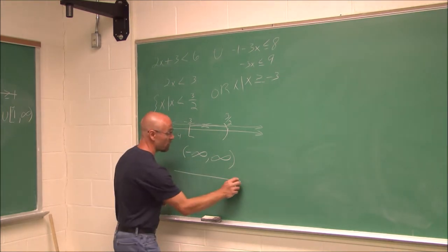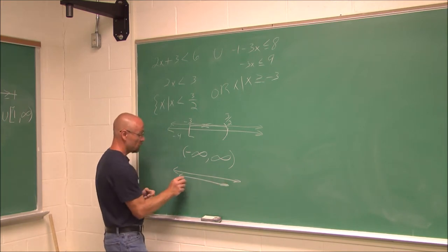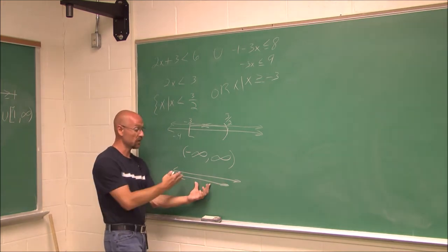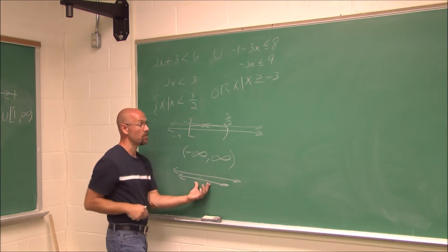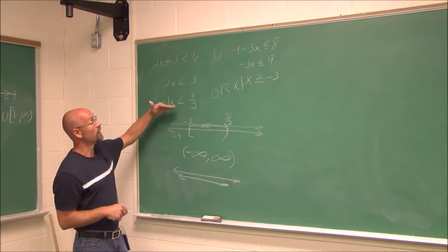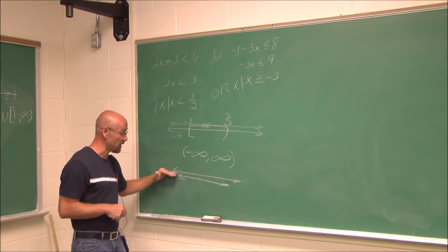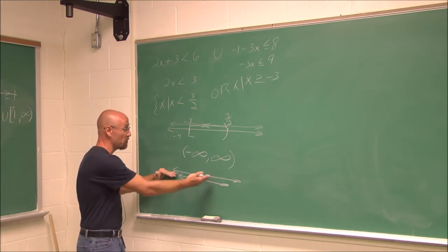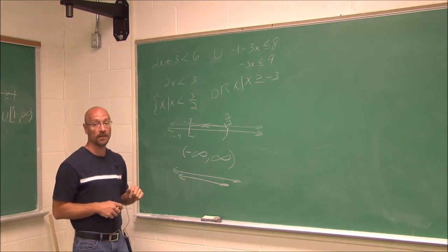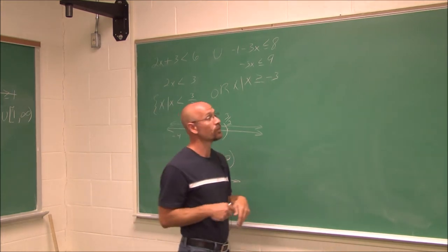If we were to graph that, we would just draw a solid line. The solution is from negative infinity to positive infinity. So we have set notation, the graphical notation, and interval notation. This is an example of all real solutions, or all real numbers.